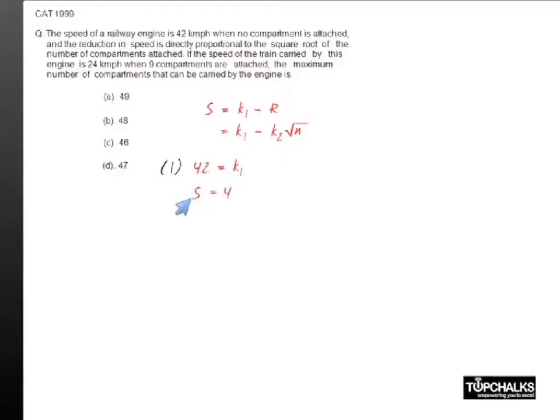now write the speed of the train as 42 minus k2 times square root of n. The second data we have is the speed of the train is 24 kilometers per hour if there are nine compartments attached, which